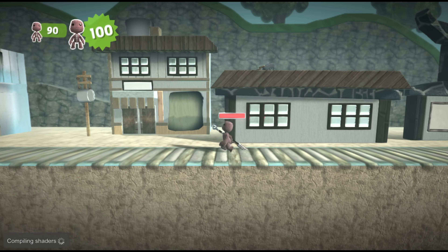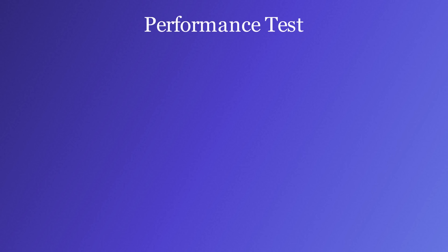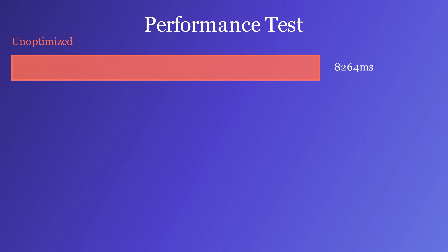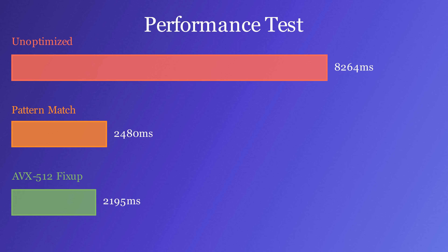GalSiv also wrote a test to confirm the performance of the optimizations. Without optimization, the test completes in 8264 milliseconds — not good. With the division pattern-matching optimization, the test completes in 2480 milliseconds. And by using VFIXUPIMPS for the special cases, the test can be completed in just 2195 milliseconds. Nice.